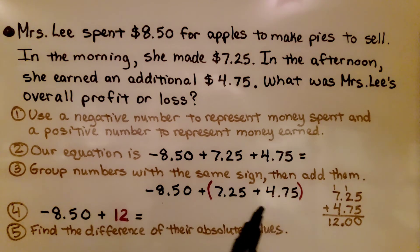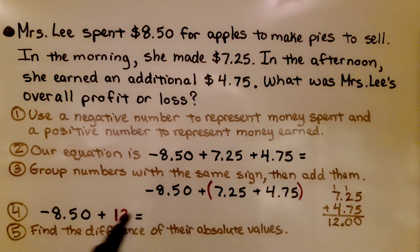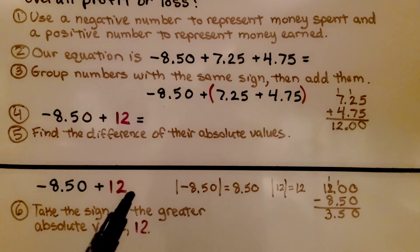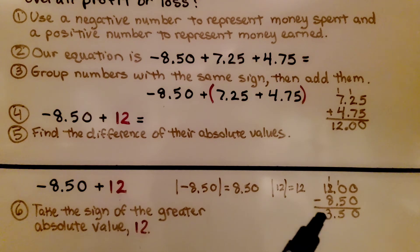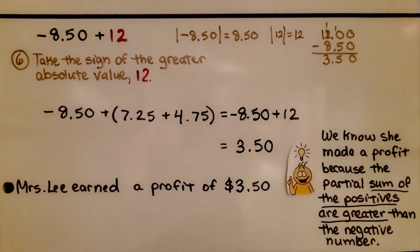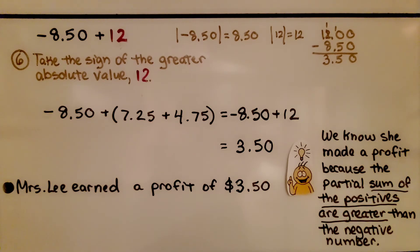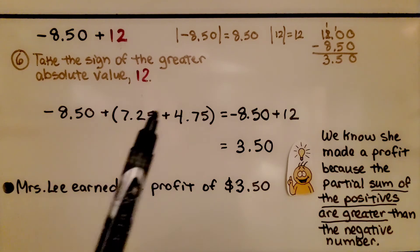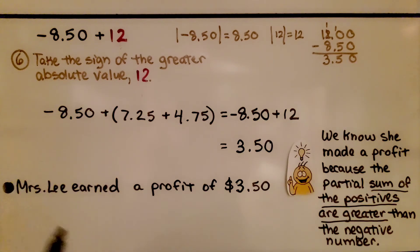We group numbers with the same sign. We have a negative plus a positive plus a positive. We add the two positives together to get 12. Now we add negative 8.50 plus 12 — we find the difference between their absolute values since they have different signs, which is 3.50. We take the sign of the greater absolute value, 12, which is positive, giving us positive $3.50. Mrs. Lee earned a profit of $3.50 because the partial sum of the positives is greater than the negative number.